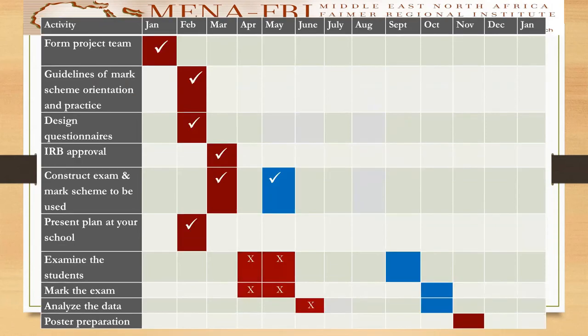The tasks marked as completed include forming the team and convincing the staff members. We made an orientation and practiced on some questions to reach a consensus on the mark scheme itself. The questionnaire and IRB approval were also accomplished. We constructed an exam and a mark scheme for the first-year medical students, but it was not used, so another one was formed for the postgraduate students. What still remains is the execution of the exam itself — examining the students, marking, and analysis of the data — to be accomplished in the coming months.